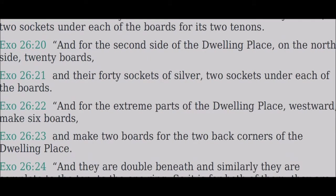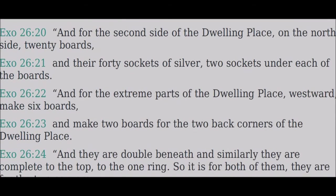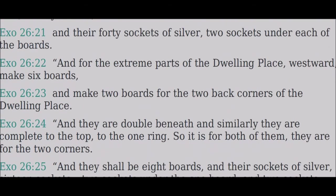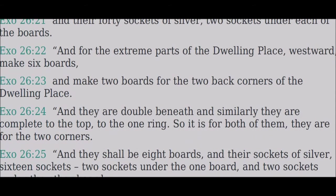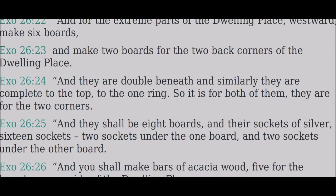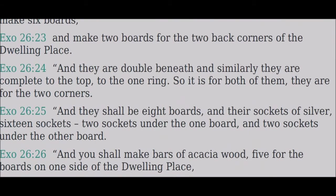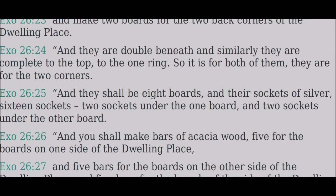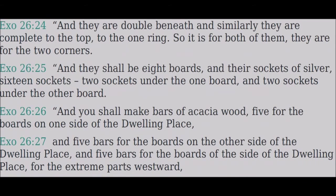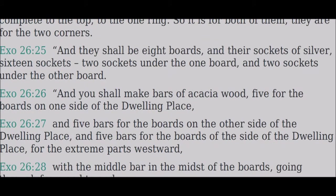For the extreme parts of the dwelling place westward, make six boards, and make two boards for the two back corners of the dwelling place. They are double beneath, and similarly complete to the top, to the one ring — so it is for both of them, for the two corners. They shall be eight boards, and their sockets of silver sixteen sockets — two sockets under the one board and two sockets under the other board.